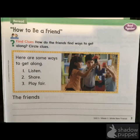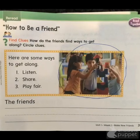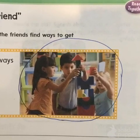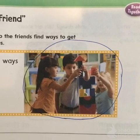On page three, it says how to be a friend. It says to find clues. We see some words on one side of the rectangle and a picture of three kids on the other side. How do the friends find ways to get along? We're going to circle the clues with our pencil. You're going to put a big circle around the kids that are building together — they're getting along, helping each other, sharing, and taking turns.